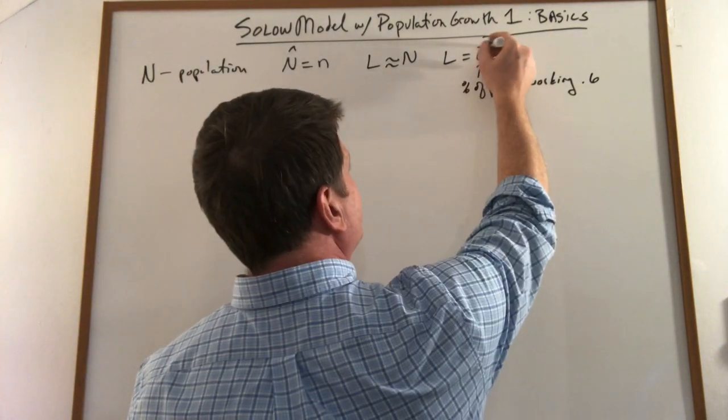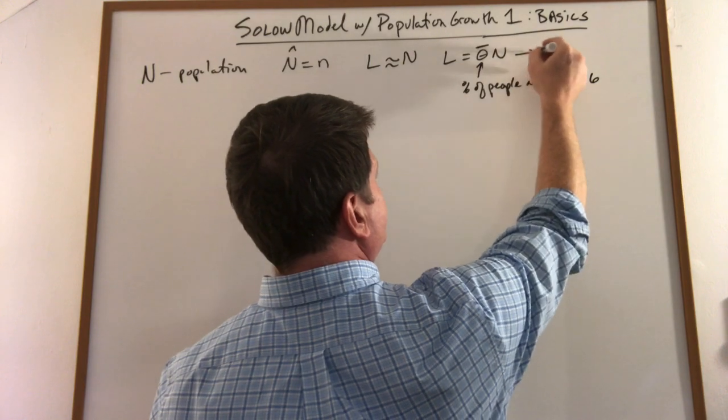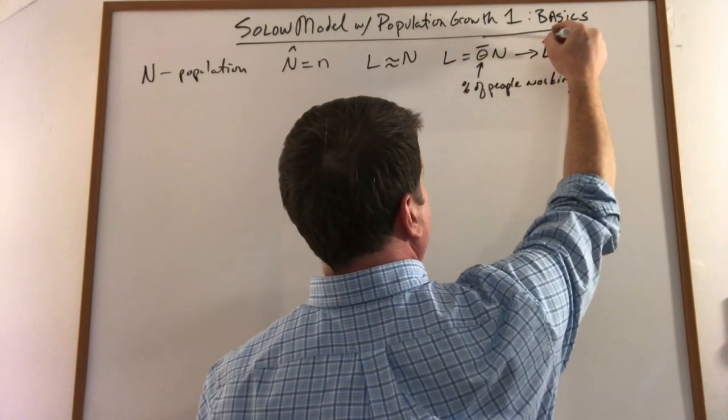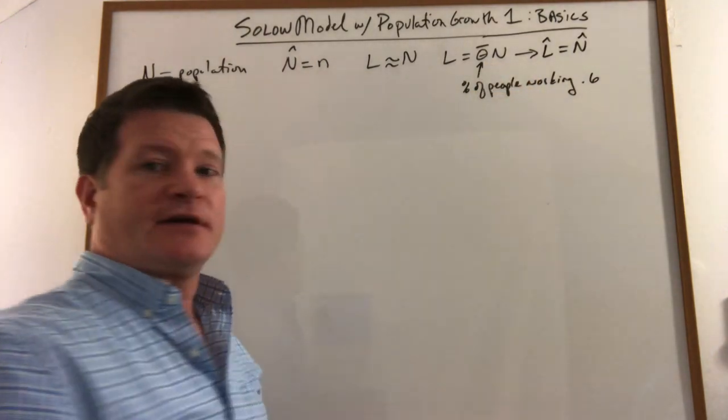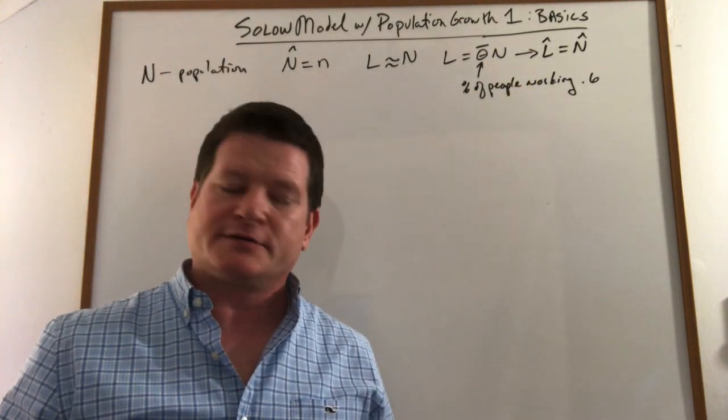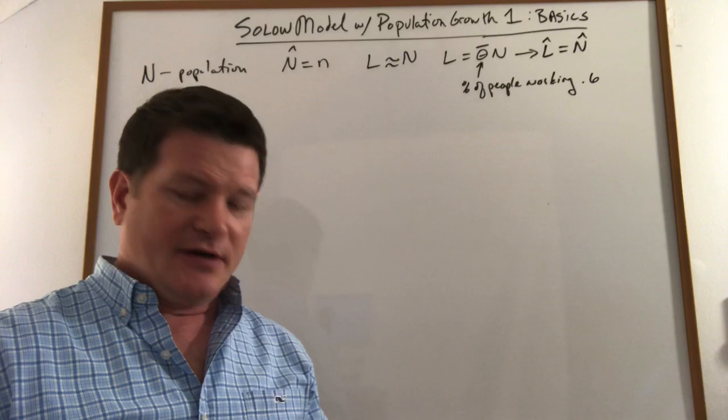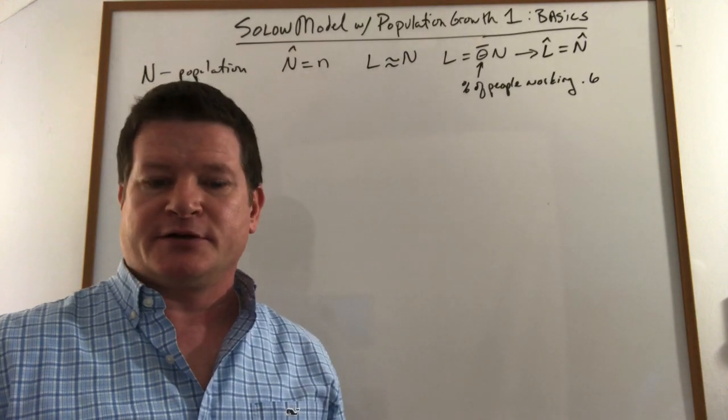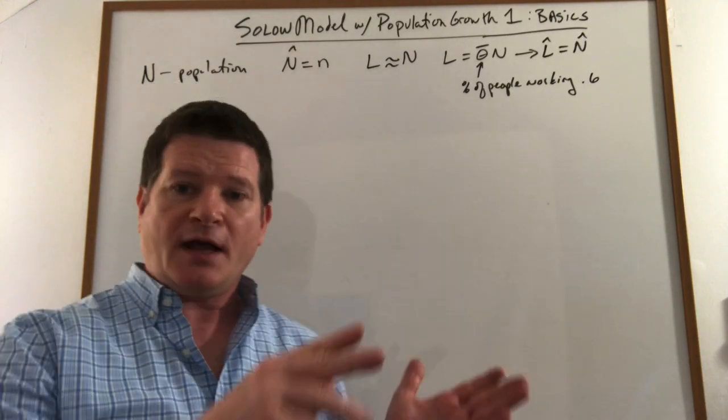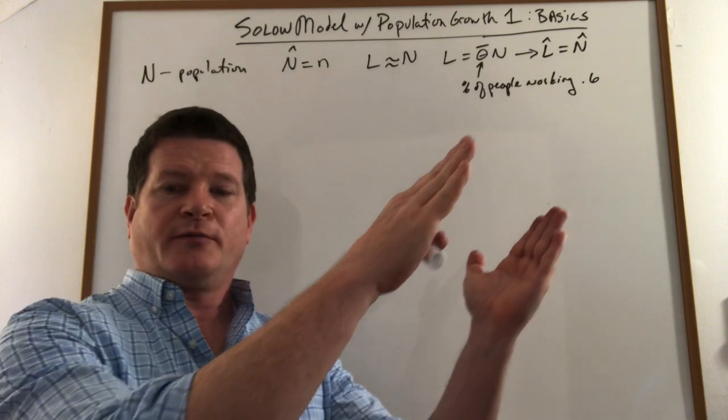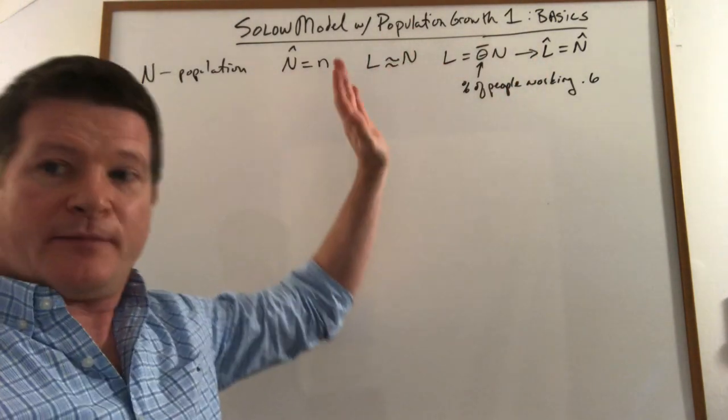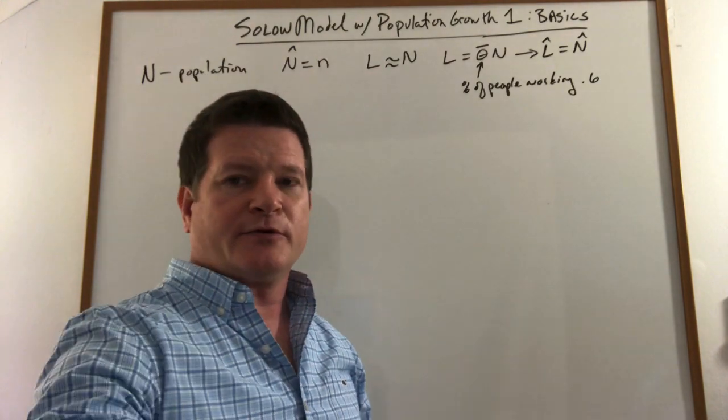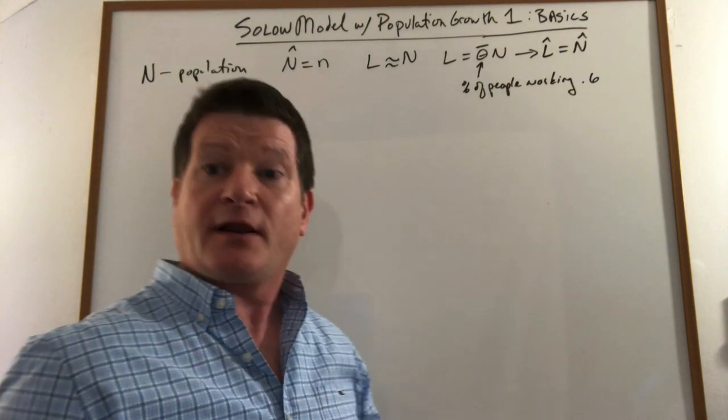So if it's pretty constant then when you convert this to growth rates it falls out and you basically get the two growing together. So it makes sense even if 60% of the population is all that's working as the population grows the total number of workers will grow too. So we can kind of flip-flop between these two especially when we're just looking at general models in a classroom.